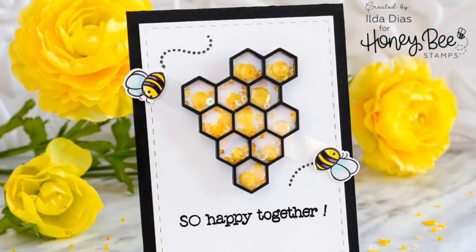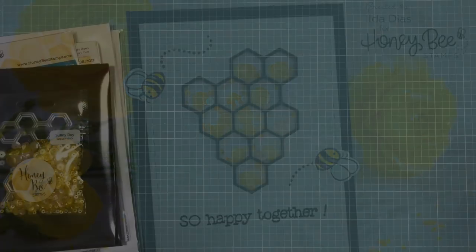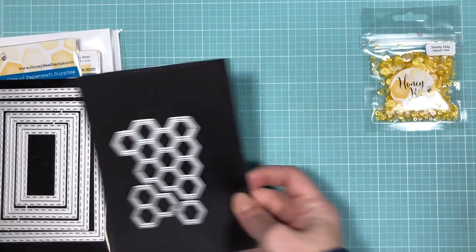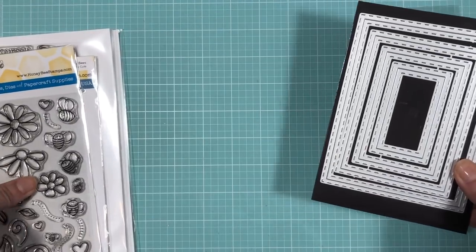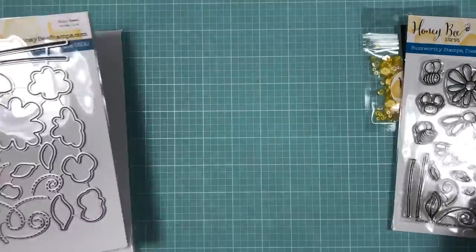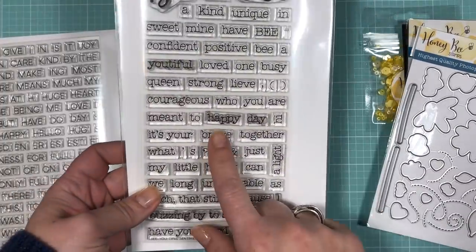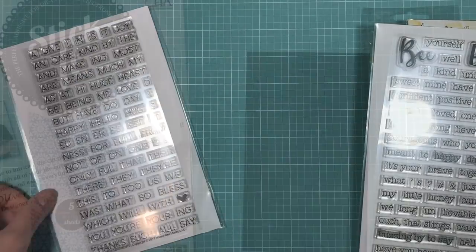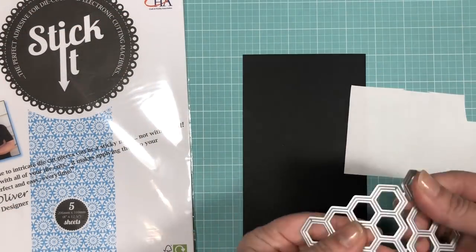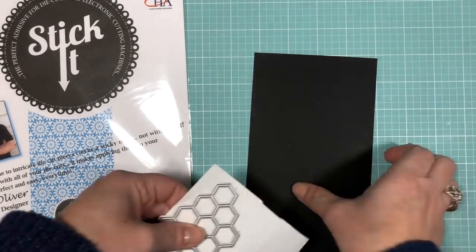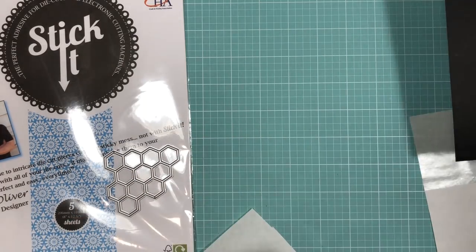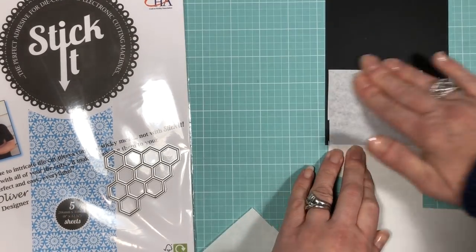Hey everyone, Ilda here from I Love Doing All Things Crafty and welcome to my first 2018 YouTube video. In today's video I'm going to show you how I made this fun interactive spin shaker card featuring a bunch of stamps and dies from Honey Bee Stamps. I'm also super excited about joining the Honey Bee Stamps design team and can't wait to share all my crafty creations with you using their awesome products. So let's get started with today's process video.